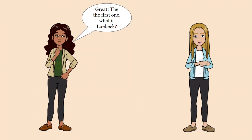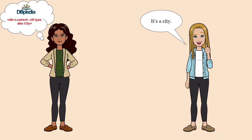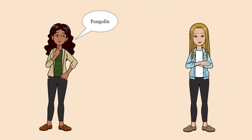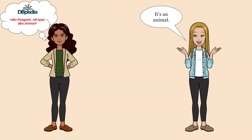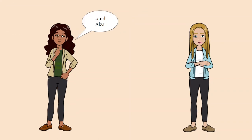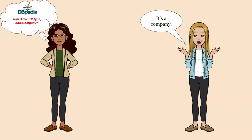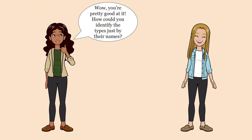Great! The first one. What is Lubeck? It's a city. Pangolin? It's an animal. And Alza? It's a company. Wow, you're pretty good at it.